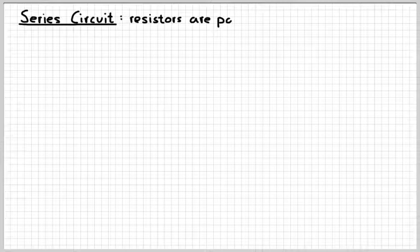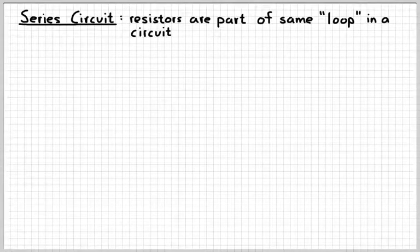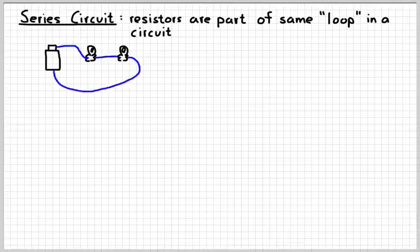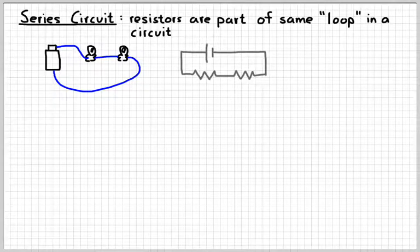The first kind of circuit is generally referred to as a series circuit. In a series circuit, the resistors are part of the same loop of the circuit. A simple picture might look like this. We have two light bulbs, one battery, and we connect them so that they're both part of the same loop. A circuit diagram will look something like this — there is one loop or one complete path from one side of the battery to the other that includes both of our light bulbs.